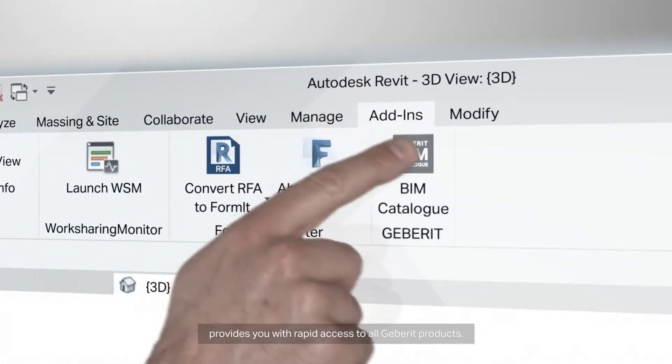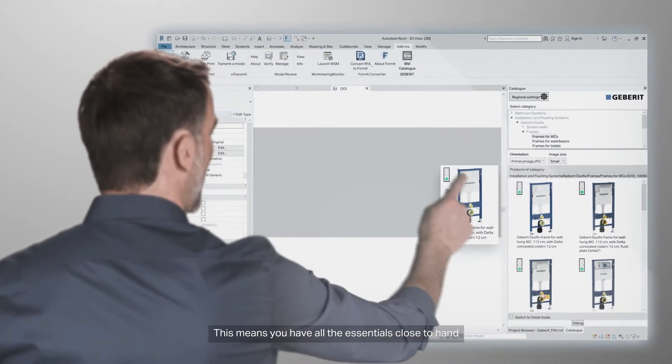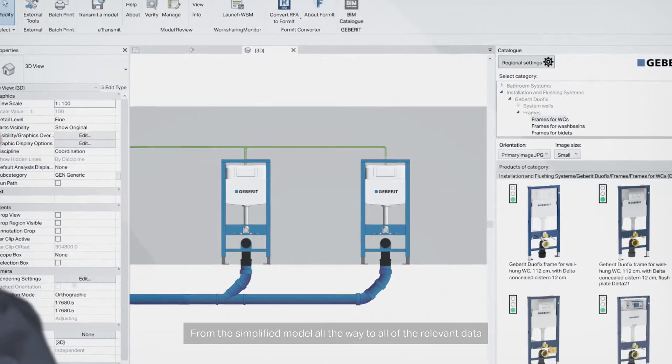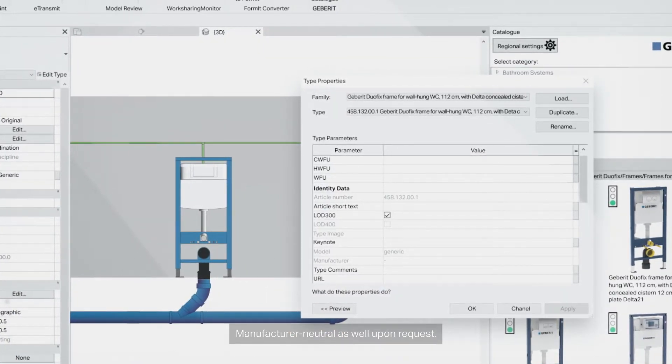The Geberit plugin for Autodesk Revit provides you with rapid access to all Geberit products. This means you have all the essentials close to hand and in compact form. From the simplified model all the way to all of the relevant data once the planning is completed. Manufacturer neutral as well upon request.